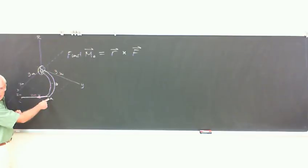What's R? R goes from the point of interest which happens to be the origin to anywhere on the line of action of that force. As long as we know it we can use it. So anywhere along the line of action of that force. Well point A is there. So is point C. So which one do we use?